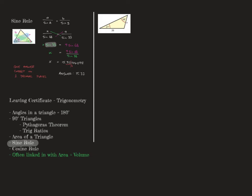First thing we're going to do is look at the sine rule — finding a missing side. We're doing leave-insert trigonometry.